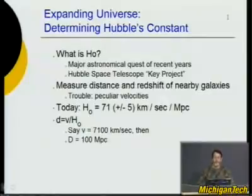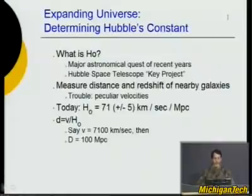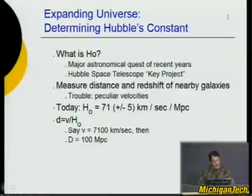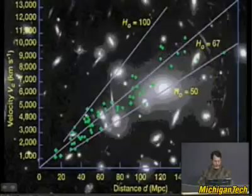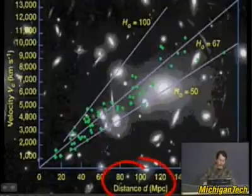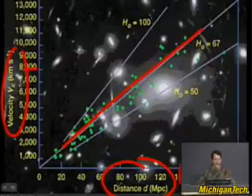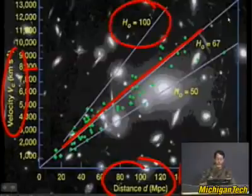First we'll go to something we've discussed in other lectures: Hubble's constant. Hubble's constant determines how fast the universe expands. The universe is expanding, and one way to estimate its age is to run that expansion movie backwards — then everything comes together. The graph where distance is plotted against velocity gives a line that tells you, if you see something far away, how fast it's going and how fast the universe is expanding.